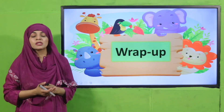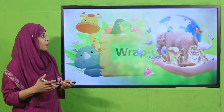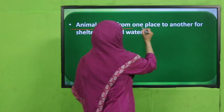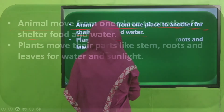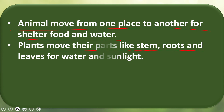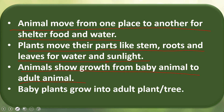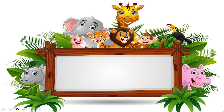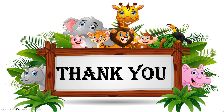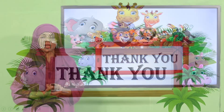For today's wrap-up: animals move from one place to another for shelter, food, and water. Plants move their parts — stem, roots, leaves — for water and sunlight. Animals show growth from baby animals to adult animals, and baby plants grow into adult plants or trees. Today we studied two major characteristics: movement and growth, and how plants and animals express them in different ways. I hope you liked the lecture. Keep everybody around you safe. Have a good day. Thank you so much. Allah hafiz.